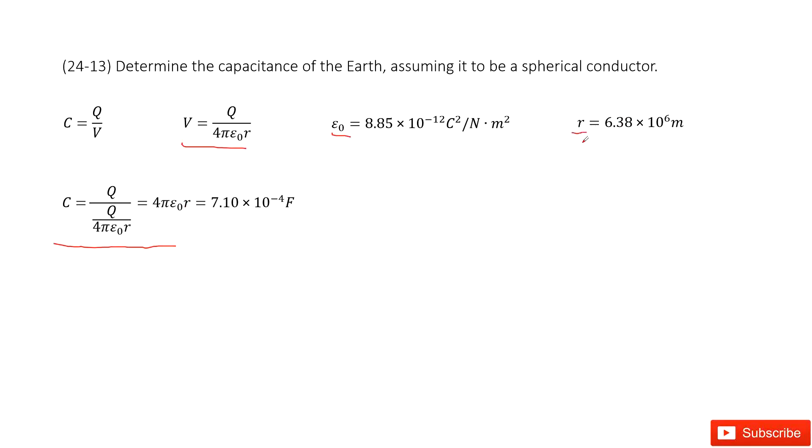And r is the radius for the Earth. It is also a constant. We write it down there. Then we input ε₀ and r inside and get the answer there. Thank you.